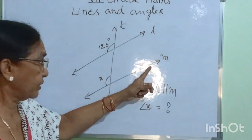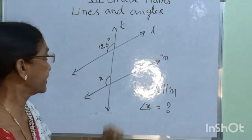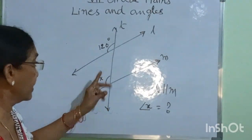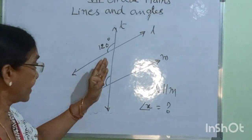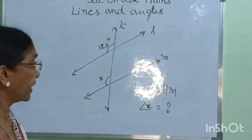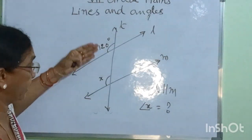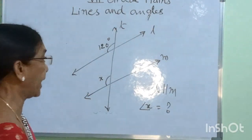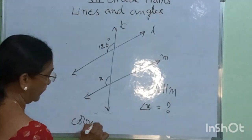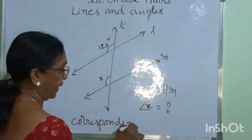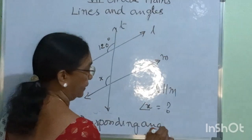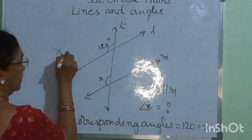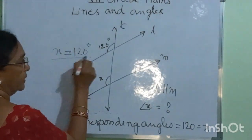See this figure. L and M are two parallel lines, L is parallel to M, and D is a transversal. These two angles are lying on the same side of the transversal and on the same side — above both parallel lines. Therefore, they are called corresponding angles. Corresponding angles are equal. Therefore, a pair of corresponding angles are equal, so 120 degrees is equal to X. Therefore, X is equal to 120 degrees.